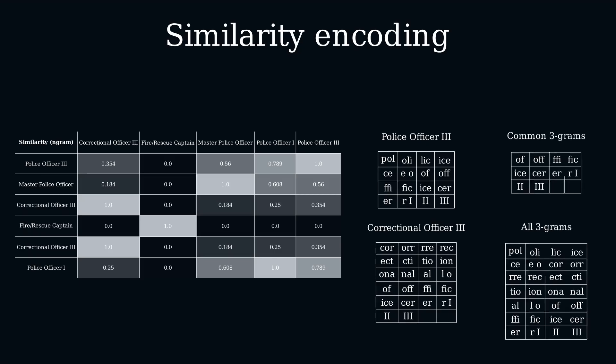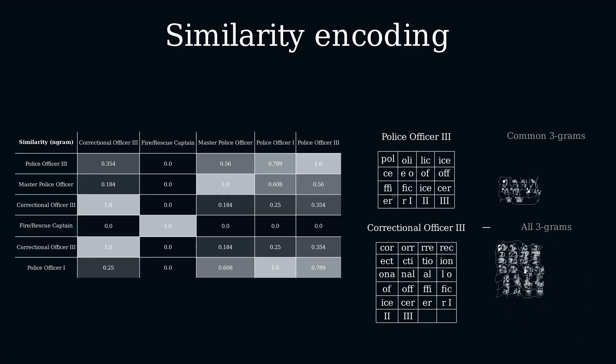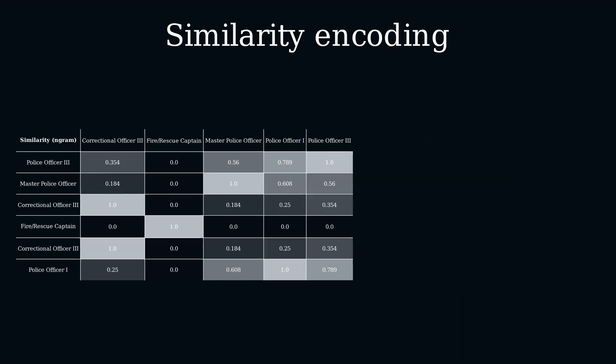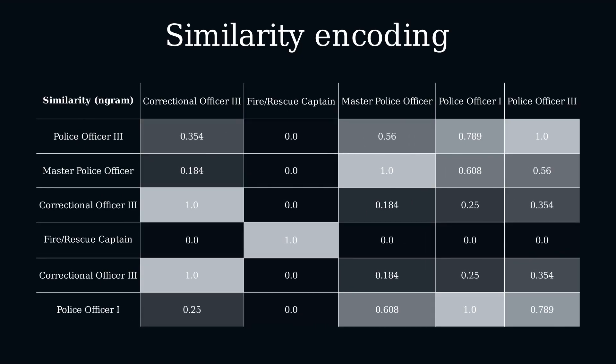Next, we'll simply do a ratio of how many 3-grams both have in common. We repeat the operation for each pair of samples, which results in a similarity matrix.